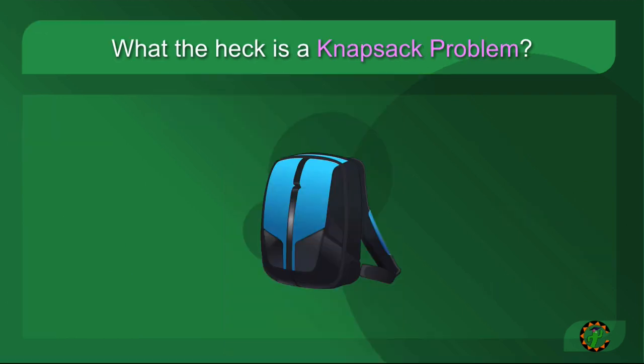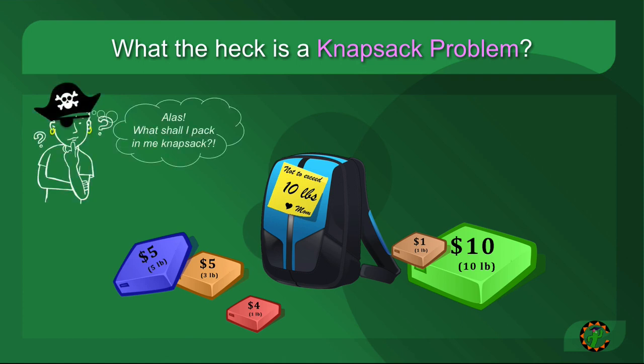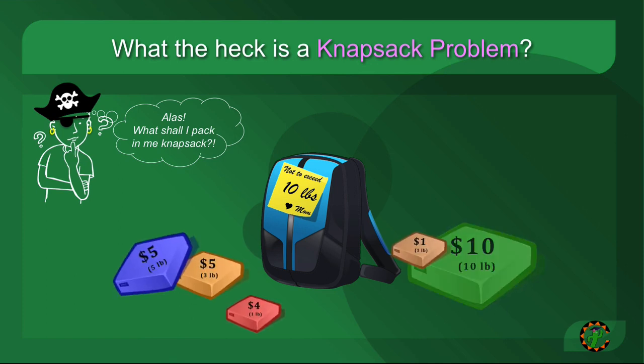Now that we know what a knapsack is, and given some constraints to it — such as the weight it can hold, or perhaps the dimensions — and then given some items that we would put in the knapsack, the natural problem arises: which of these items should we put into the knapsack? Should we put this high-value item here, or should we put some other subset of items in there to maximize our value?